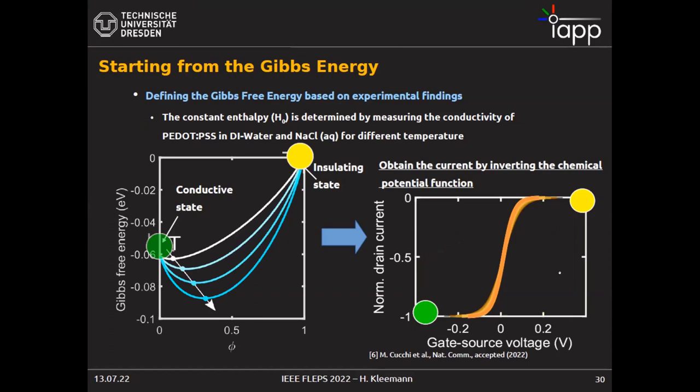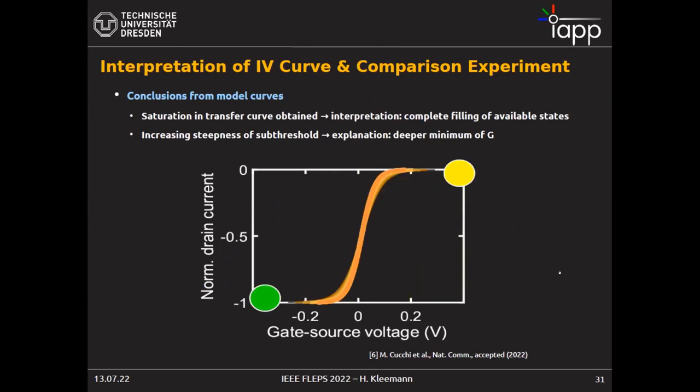The resulting ID curve shows a conductive state, an insulating state, and a steep switching in between. One very obvious conclusion from the model is that there's a saturation in the transfer curve: if we increase the gate voltage beyond a certain point nothing further happens. The explanation is pure thermodynamics — there's simply a limited number of states available. This is something never considered in normal TFT models because the density of states there is much larger.